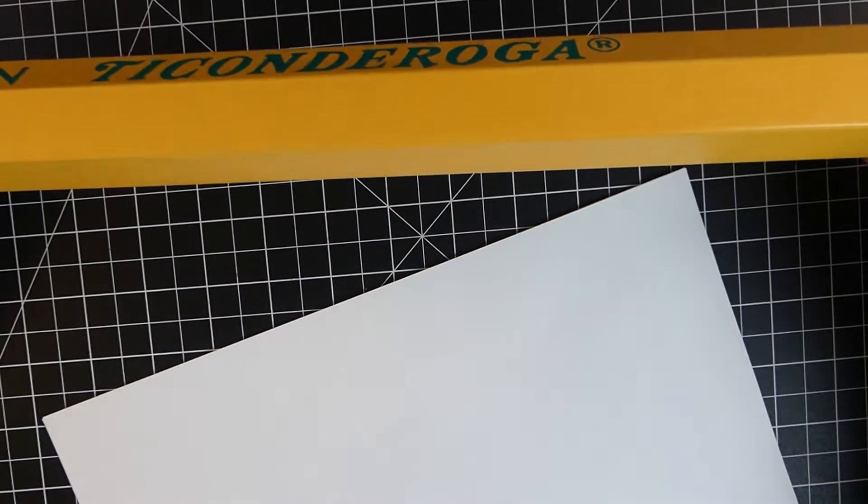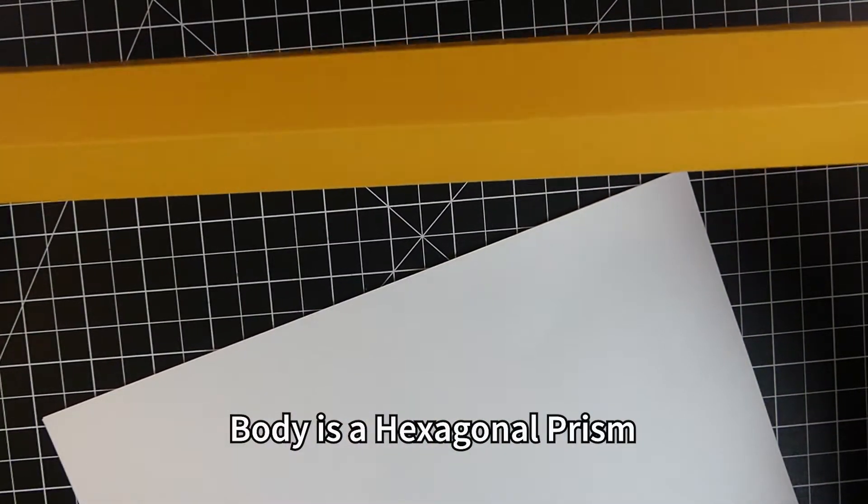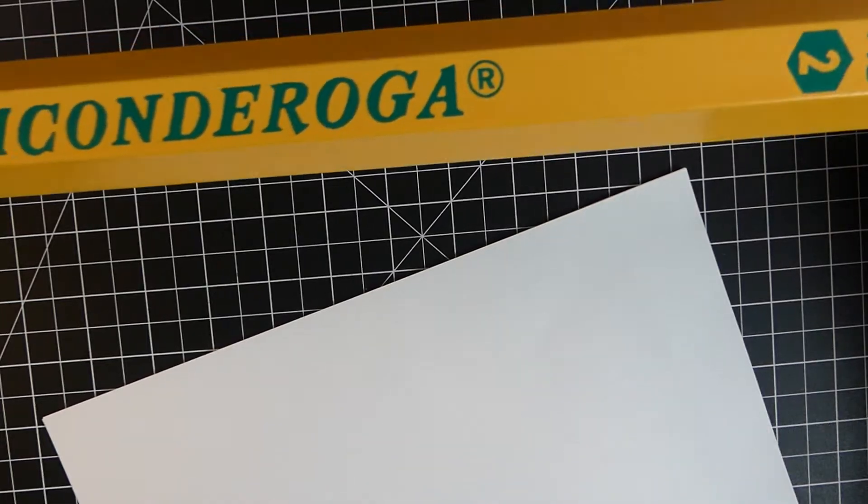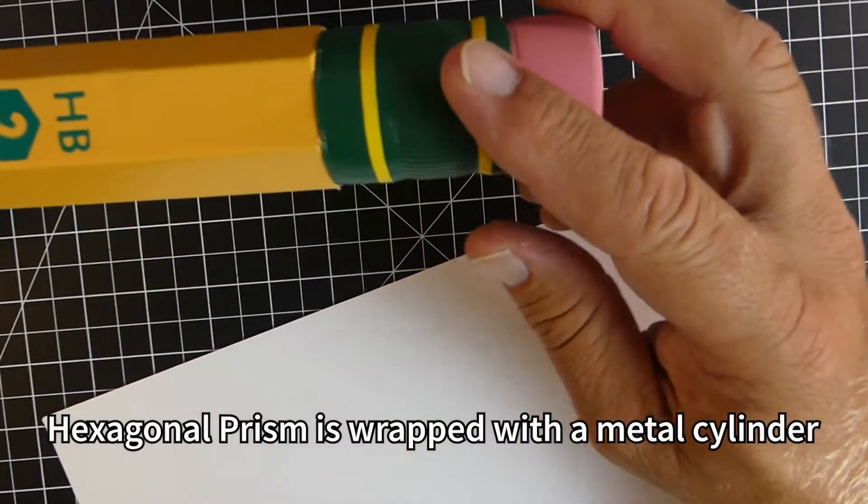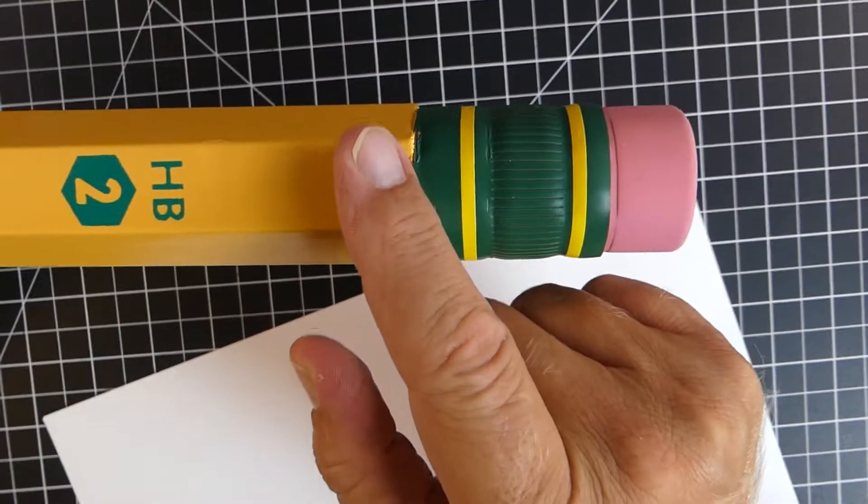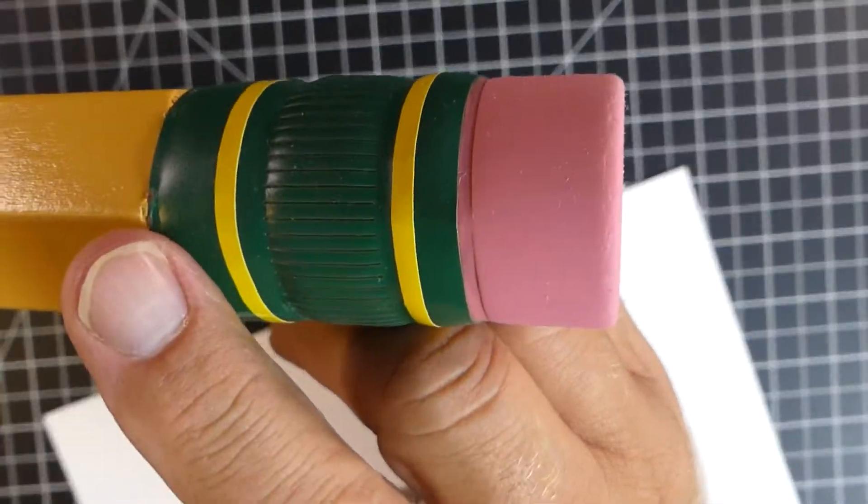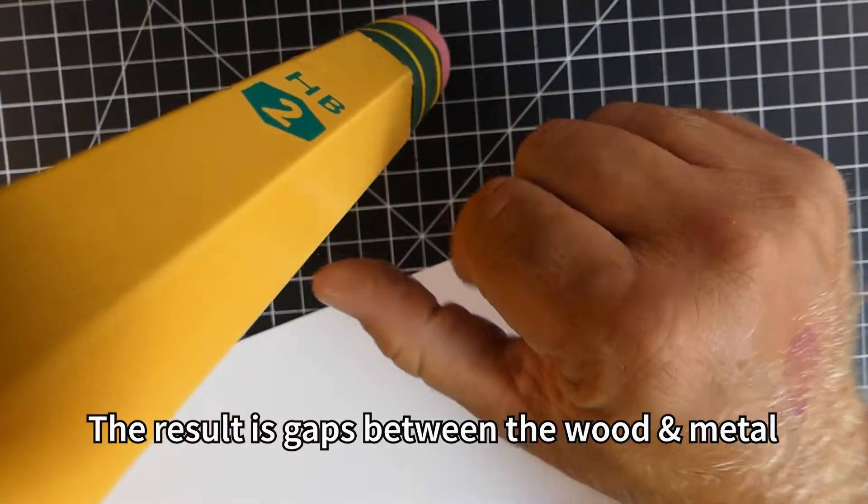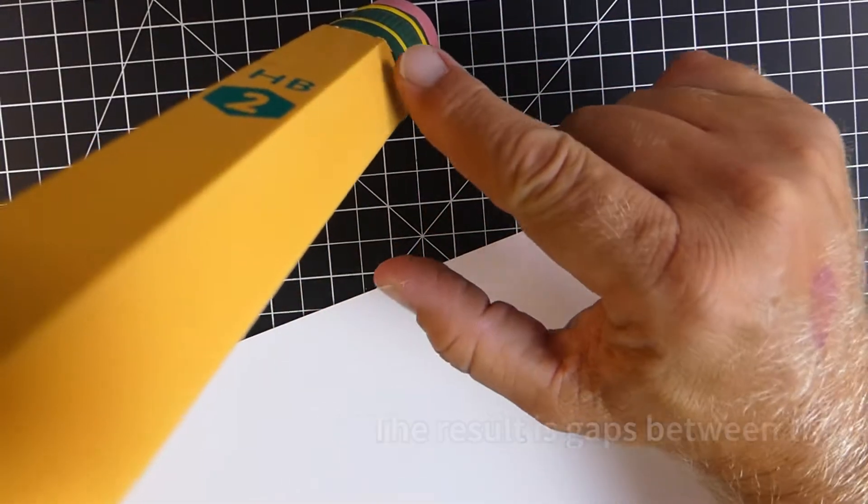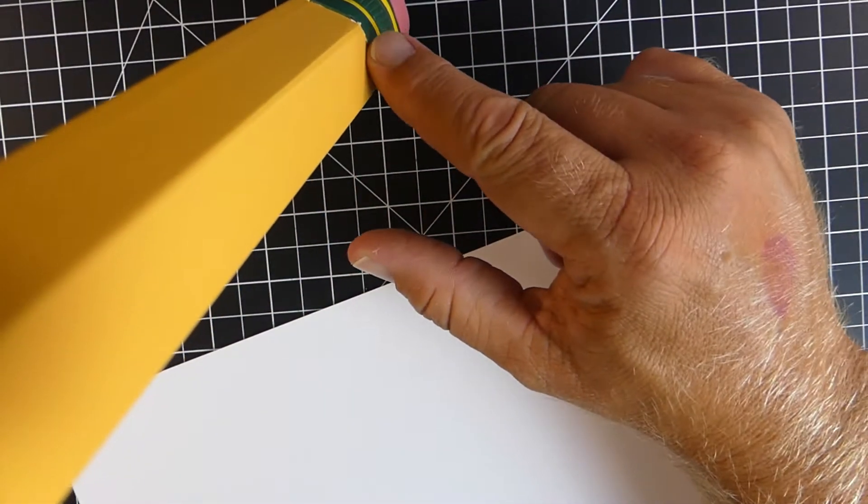As we're getting ready to make this, there's going to be certain challenges we're going to have to look at. First of all, the main body of our pencil is a hexagonal prism. But on the end of it, the metal part and the eraser are both cylinders. Now that creates a little bit of a problem because where the hexagonal prism and the cylinders meet, there are gaps that are created.